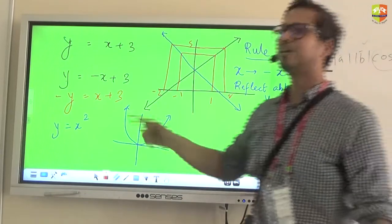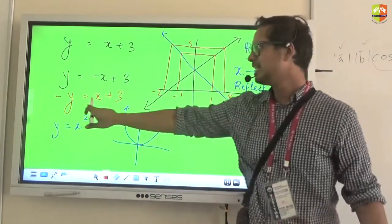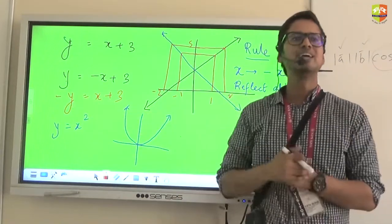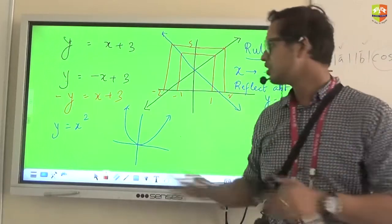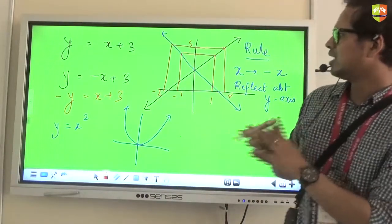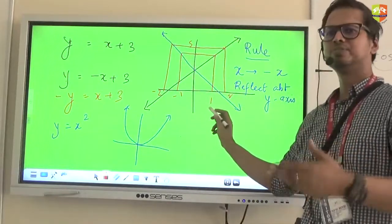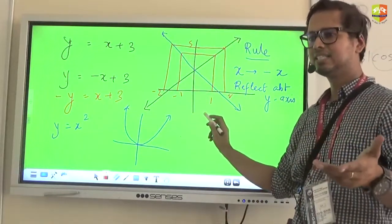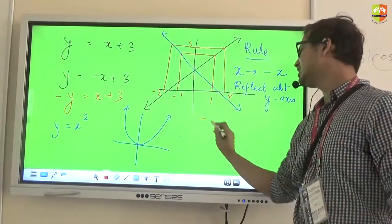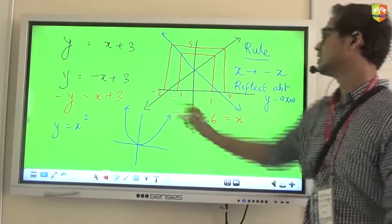Changing the sign of Y, what happens? Let's say initially, your Y value was, let's say, give me any Y value here. So Y is equal to 6 means, answer here.